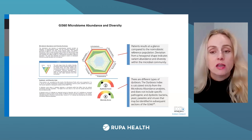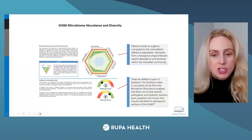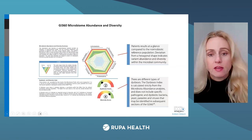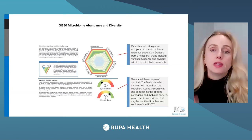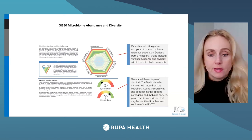The GI 360 starts with this broad-based phyla information, and then each piece of information becomes more and more detailed. The next piece is the dysbiosis score, which goes from 1 to 5. The conditions we discussed — IBS, IBD, obesity, diabetes — are associated with dysbiotic guts, and those are going to be the scores of 4 and 5.